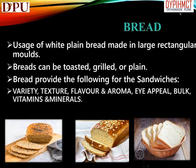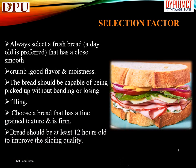Bread: white plain bread is made in large rectangular molds. Bread can be toasted, grilled, or plain. Bread provides the following for sandwiches: variety, texture, flavor and aroma, appeal, bulk, and vitamins and minerals. When selecting bread, always select fresh bread — a day-old bread is preferred — that has a close smooth crumb, good flavor, and moistness.